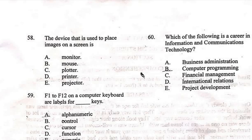Question 58: 'The device that is used to place images on a screen is —.' Options are: A) monitor, B) mouse, C) plotter, D) printer, E) projector. To place images on a screen we use the projector, which is option E.